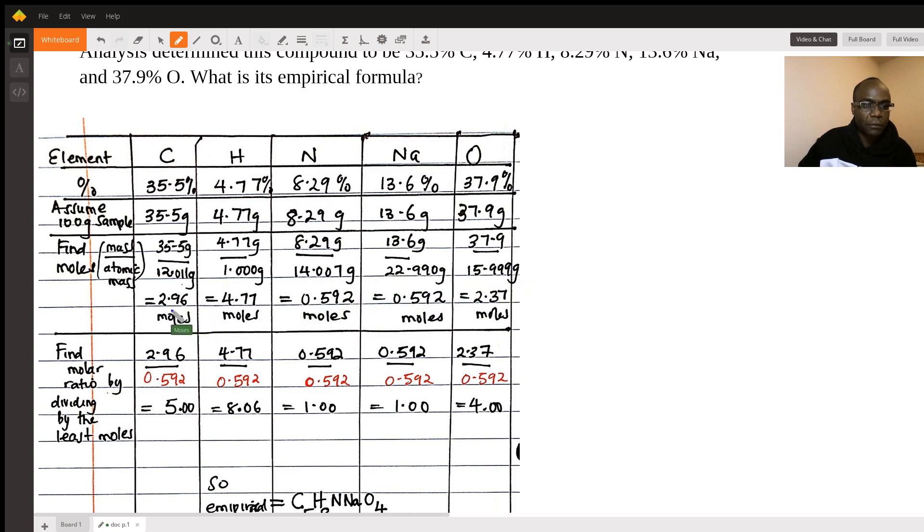So the moles will be found and I've written them, of course, in three significant figures because that's what I have up there in three sig figs. And then the next step is to find the whole number ratio, whole molar number ratios because elements combine in whole numbers.